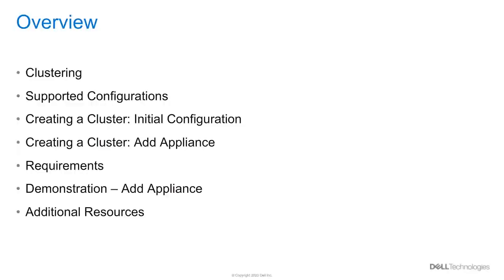There are a few different topics that we will cover in this PowerStore video. First, we will review what clustering means for PowerStore. Following that, we will cover more details on the different supported cluster configurations. We will then review the two methods of creating a multi-appliance cluster: first, through the Initial Configuration Wizard, and then through the Add Appliance Wizard. Following this, we will cover any additional requirements and recommendations. Lastly, a video demonstration will be shown on adding an appliance to an existing cluster.